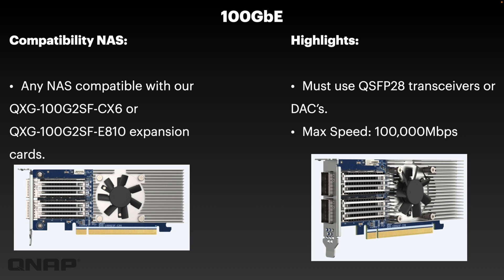Moving into the final standard: 100 gig ethernet. We've got a couple of 100 gig cards — one from Mellanox ending in the CX6 part code and one from Intel ending in E810. The Mellanox one is the one we're transitioning to from the Intel one. These work in our all-flash arrays — the very high-end ones, typically with U.2 NVMe drive bays. While they could possibly work in lesser NAS, there's almost no point because to get the speed of this card you need very fast storage; SATA drive-based arrays simply can't keep up. This uses QSFP28 transceivers or DACs, with a maximum of 100,000 megabits per second per port (two ports on the card). We have a select few NAS at the very top end that can drive the performance of this card, and we have tested compatibility.